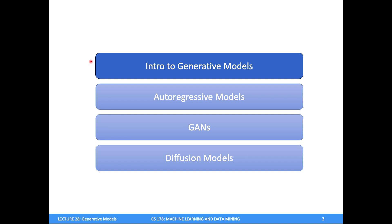In today's lecture we're going to introduce the concept of a generative model and then see three different classes of them: autoregressive models, GANs, and diffusion models. Today's lecture is going to be really high level. Generative models are typically fairly math-heavy, and we certainly don't have enough time in one lecture to go through all the details, so the idea is just to get a high-level intuition for how these things work.